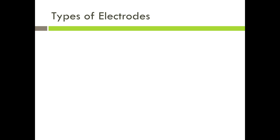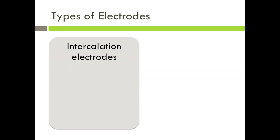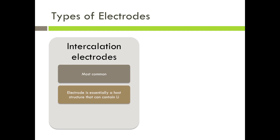In general, electrodes can be classified into two main types. Intercalation electrodes are the most common and essentially the electrode is a host structure that can contain lithium. Examples of intercalation electrodes are lithium cobalt oxide, the most common cathode material in use today, lithium iron phosphate, and graphite, the most common anode material today.